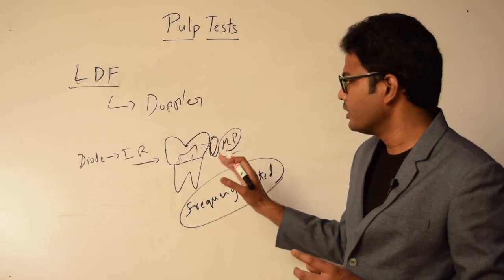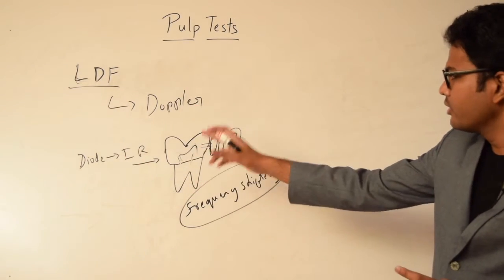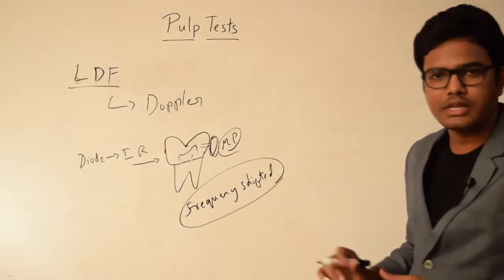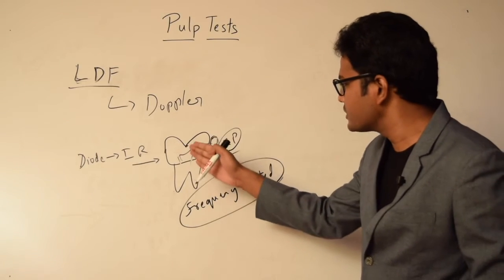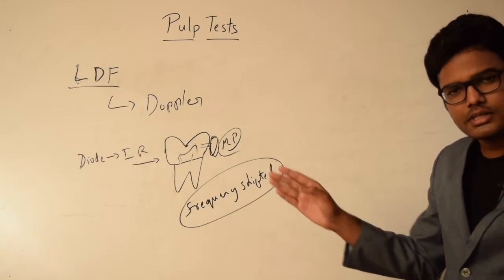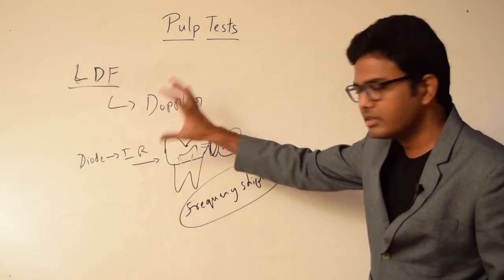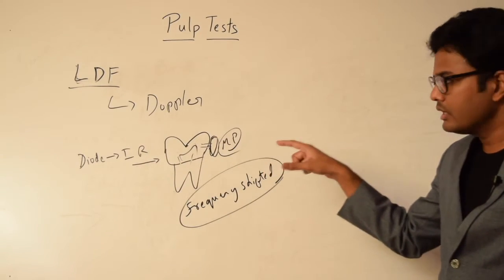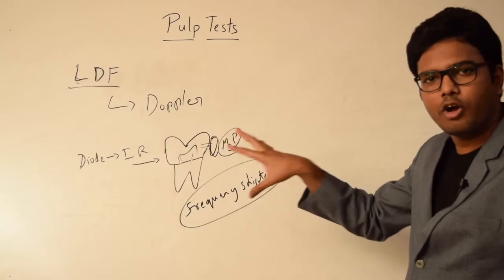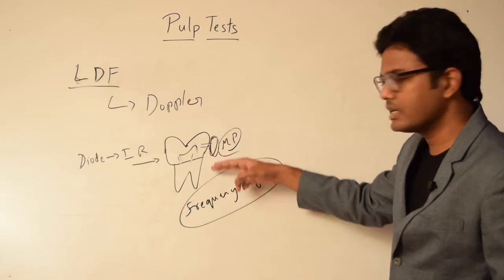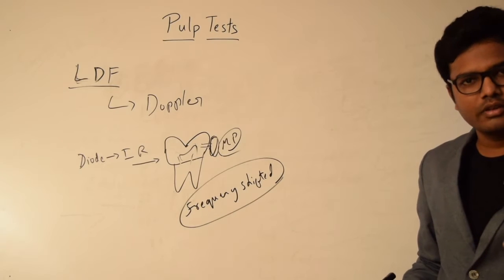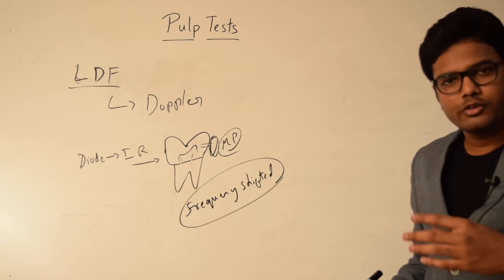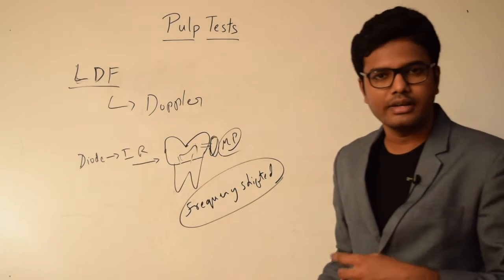The principle is simple: a diode emits infrared rays incident on the tooth of interest, and a sensor sits on the opposite side. The moving red blood cells within the microvasculature cause frequency shifting of the infrared rays — the infrared ray has a specific frequency that shifts the moment it encounters a moving red blood cell, which is detected by the sensor. Based on that frequency shift, we analyze the velocity of the red blood cells, helping us determine the vitality of the pulp.